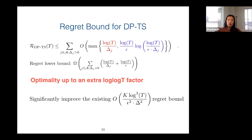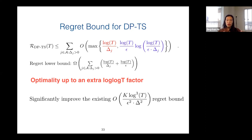For the regret bound of DPTS, it scales with the number of sub-optimal actions. For each sub-optimal arm, the regret takes the form of max between two terms: the first term log T / Δ is the regret in the non-private setting, and the second term (highlighted in blue) is the additional regret cost of introducing differential privacy. Comparing this regret bound to the regret lower bound, we can claim it is optimal up to an extra log log T factor, and it significantly improves the existing log³ T regret bound.